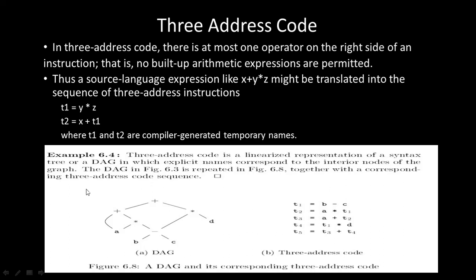Taking an example with a given DAG, we write the corresponding three-address code. First we evaluate b-c and store the result in T1. Then using T1, we compute further operations storing results in T2, T3, T4, T5. These T1 through T5 are temporary variables whose names are generated by the compiler. Remember that the right-hand side of each instruction contains at most one operator, and the left-hand side contains only one operand.